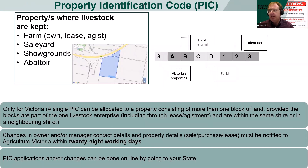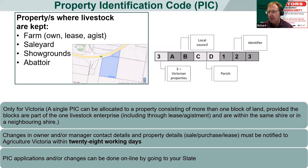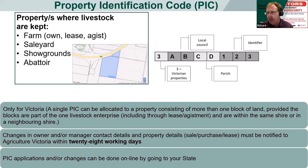When we talk about biosecurity, one of the blocks that we utilise is PICs — Property Identification Codes. Some of the information currently on screen is really only relevant to Victoria, particularly what the PIC is and some of the requirements surrounding it. Basically, a PIC is a property where livestock is kept, including bees.